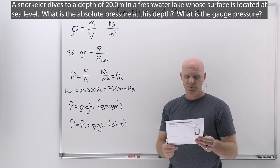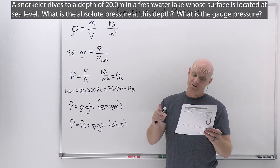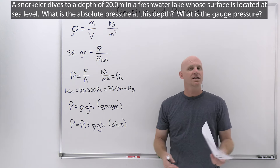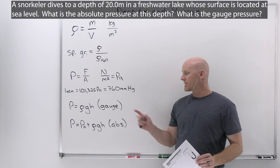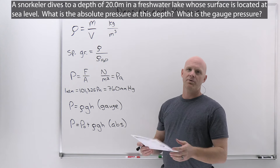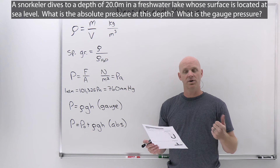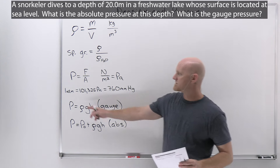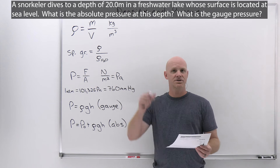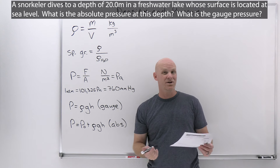A snorkeler dives to a depth of 20.0 meters in a freshwater lake whose surface is at sea level. What is the absolute pressure at this depth, and what is the gauge pressure? One useful note: every 10-meter depth in water is approximately 100,000 Pascal, roughly one atmosphere. So every 10 meters you go down in water is roughly an additional atmosphere of pressure — a nice rule of thumb.